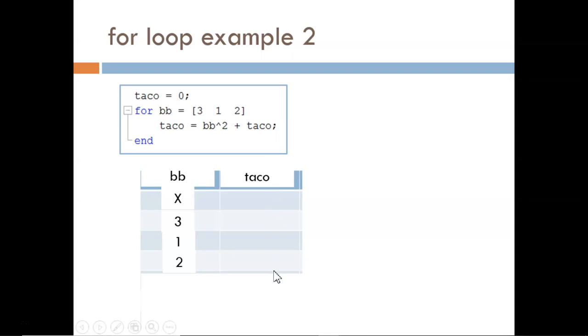Before the loop, taco equals 0. Then the new taco value is equal to bb squared plus the current taco value. Here that is 3 squared plus 0, or 9. Next we have 1 squared plus 9 equals 10. Finally, 2 squared plus 10 equals 14, and the loop is complete.